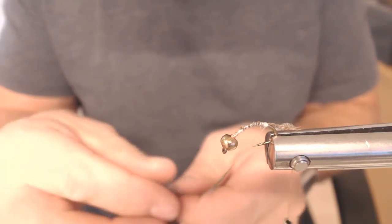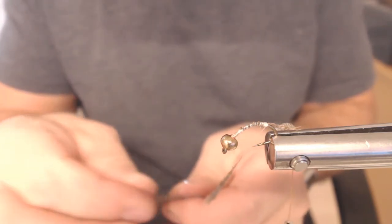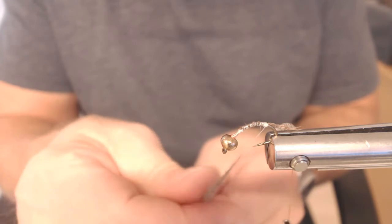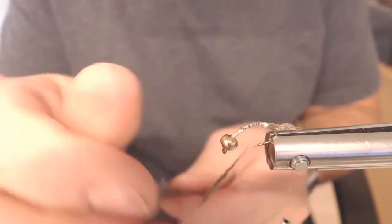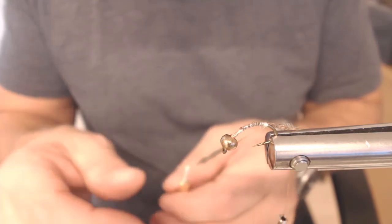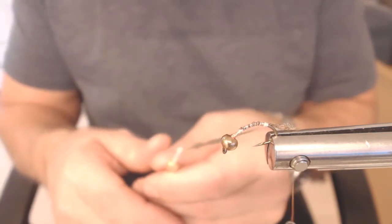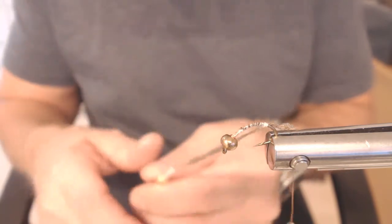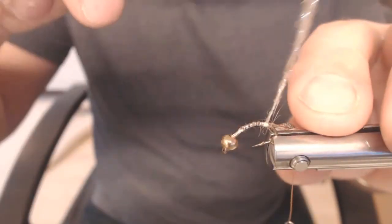Nå dubber jeg på tråd. Fester inn. Med et sånn kaninskin. Hvis du kjenner noen som driver med kaniner, så har du dubbing for resten av livet ditt. Det er jo kjekt og greit det. (Now I'm dubbing on thread. With rabbit skin. If you know someone who works with rabbits, you have dubbing for the rest of your life. That's nice and easy.)